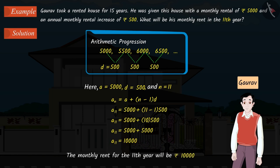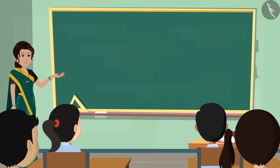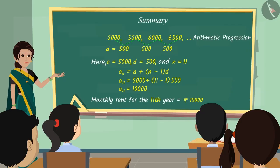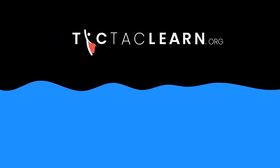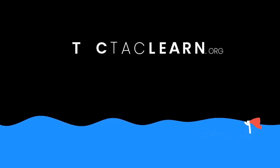So, the monthly rent for the 11th year will be Rs. 10,000. In this video, we learnt to find the nth term of an AP with the help of a few examples. In the next video, we will see simple mistakes that can occur while solving these types of questions.